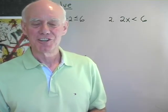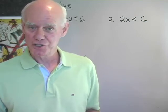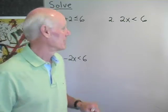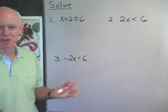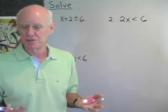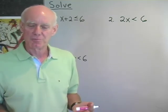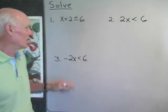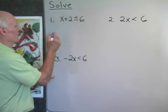I want to solve some linear inequalities in one variable, and I want to do it in such a way that we see the difference between the addition property for inequalities and the multiplication property. So first of all, I want to solve x plus 2 less than or equal to 6. I'm going to add negative 2 to both sides. The addition property tells me it's okay to do that anytime I want, and I won't change the direction that the inequality symbol points in.